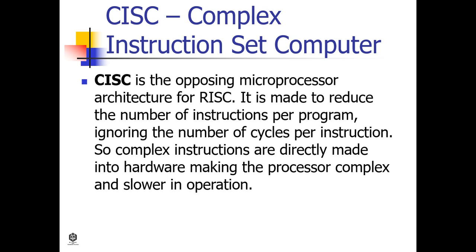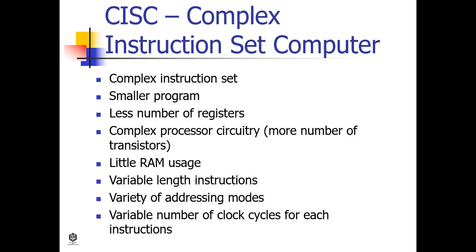This architecture is designed to reduce the cost of memory by reducing the program length. CISC characteristics include: complex instruction set, smaller programs, fewer registers, complex processor circuitry with more transistors, little RAM usage, variable-length instructions, a variety of addressing modes, and a variable number of clock cycles for each instruction.